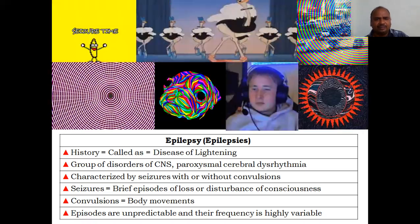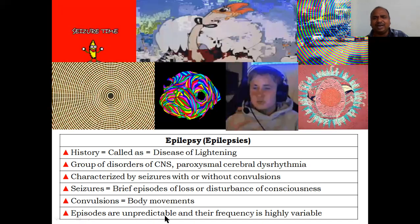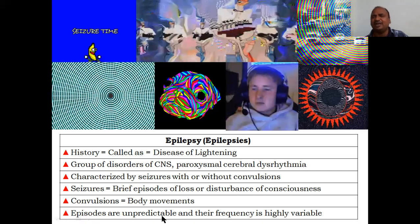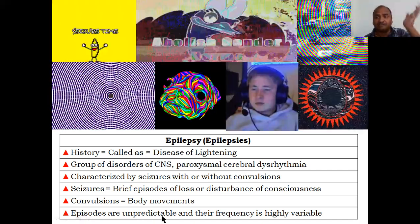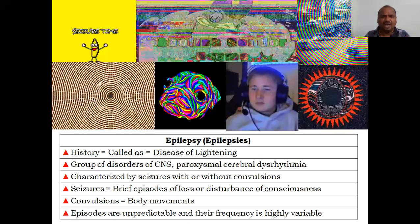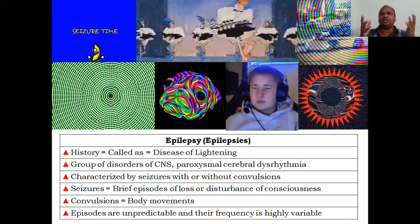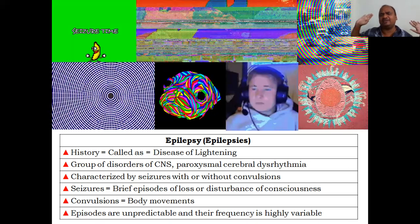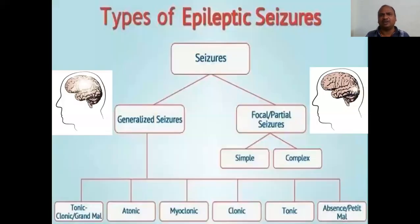These episodes are unpredictable — you cannot predict whether it will happen in the afternoon or evening. The frequency is highly variable: for some people it is very low, for others it is high. There are two main types of seizures: generalized seizures and focal or partial seizures.